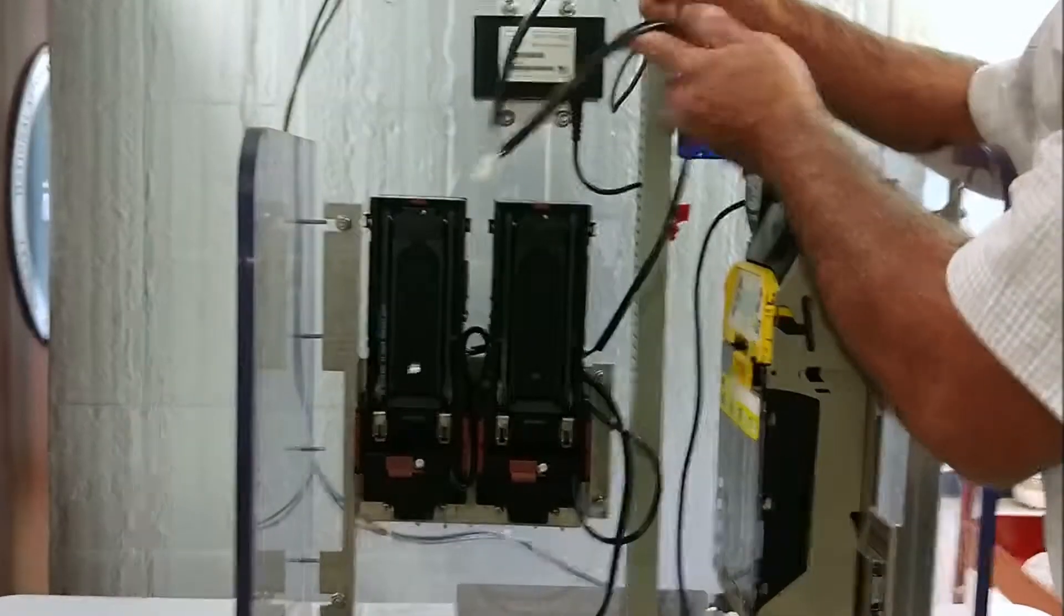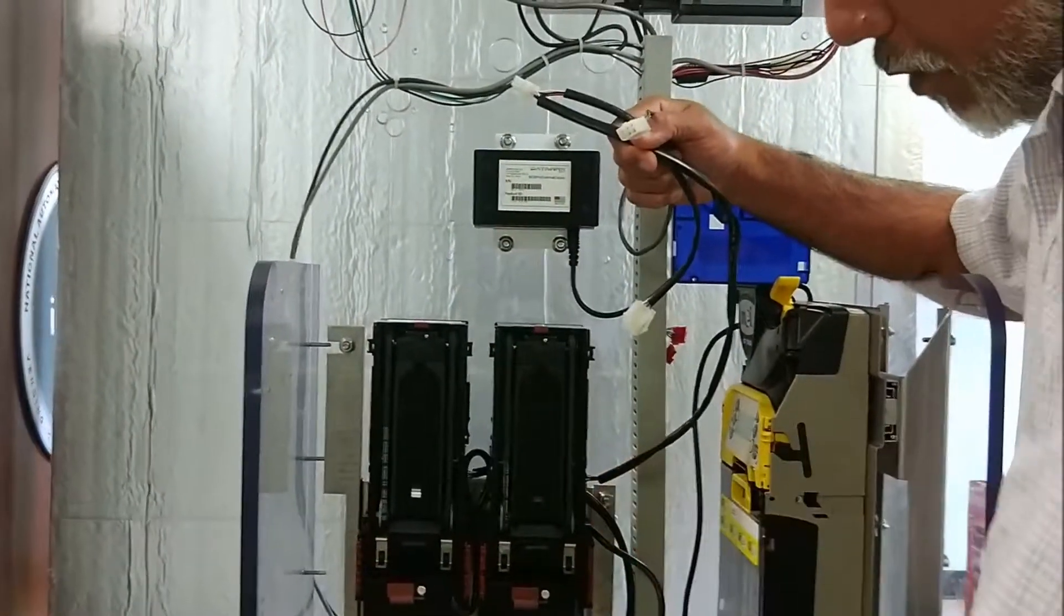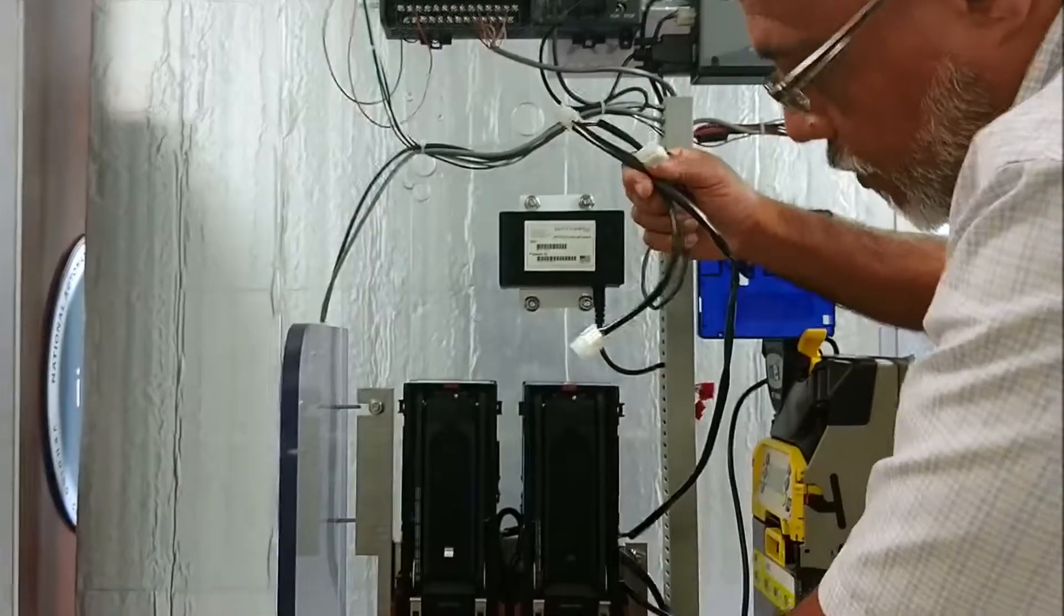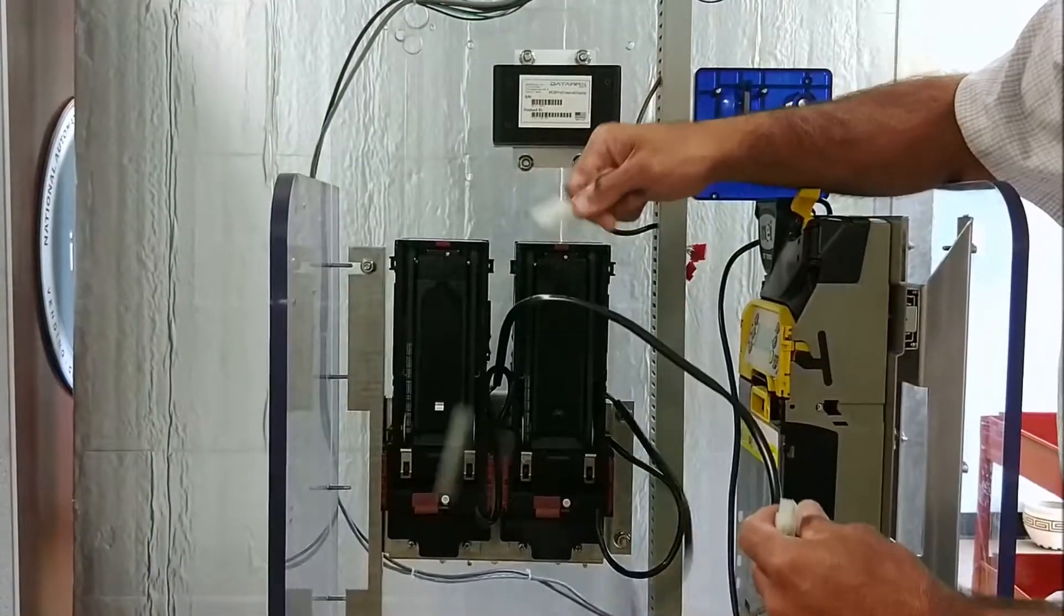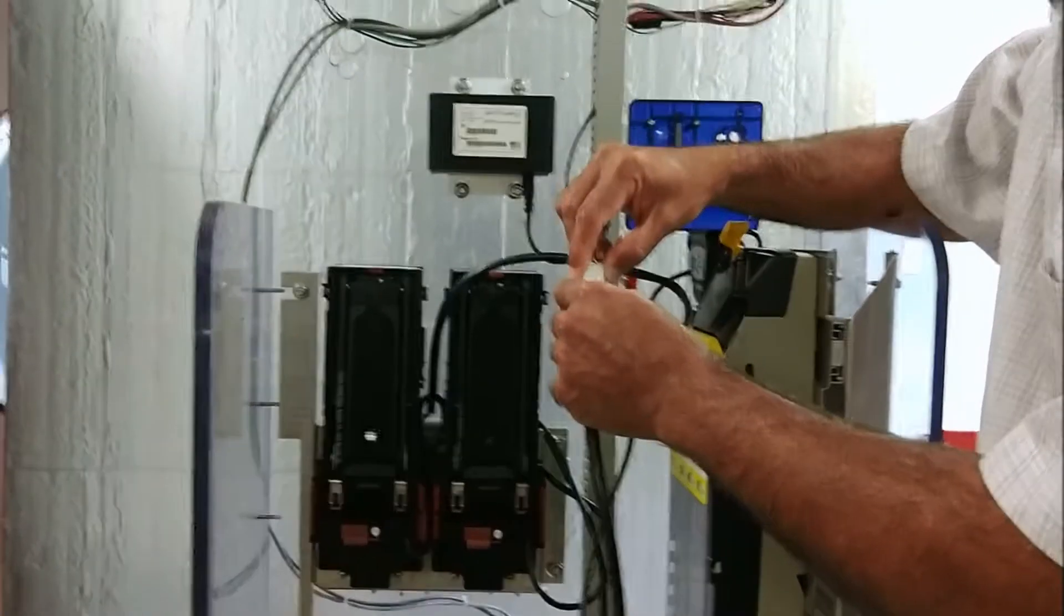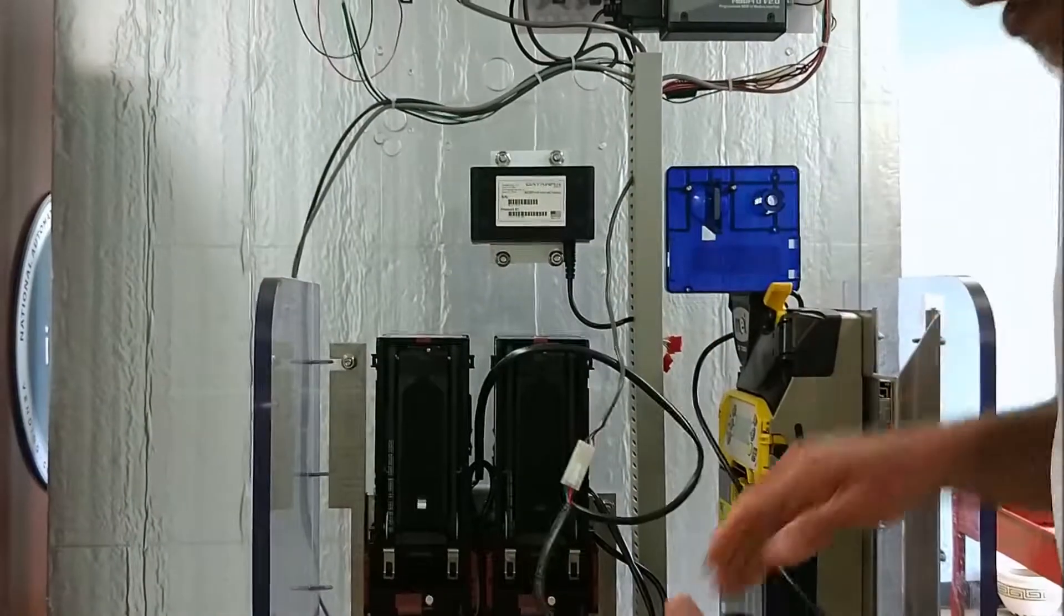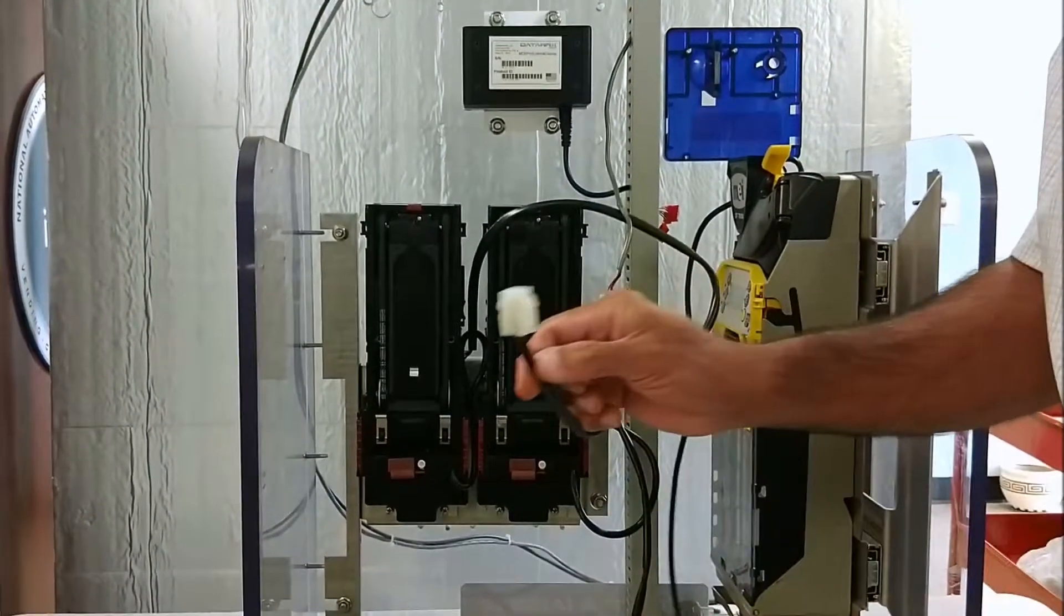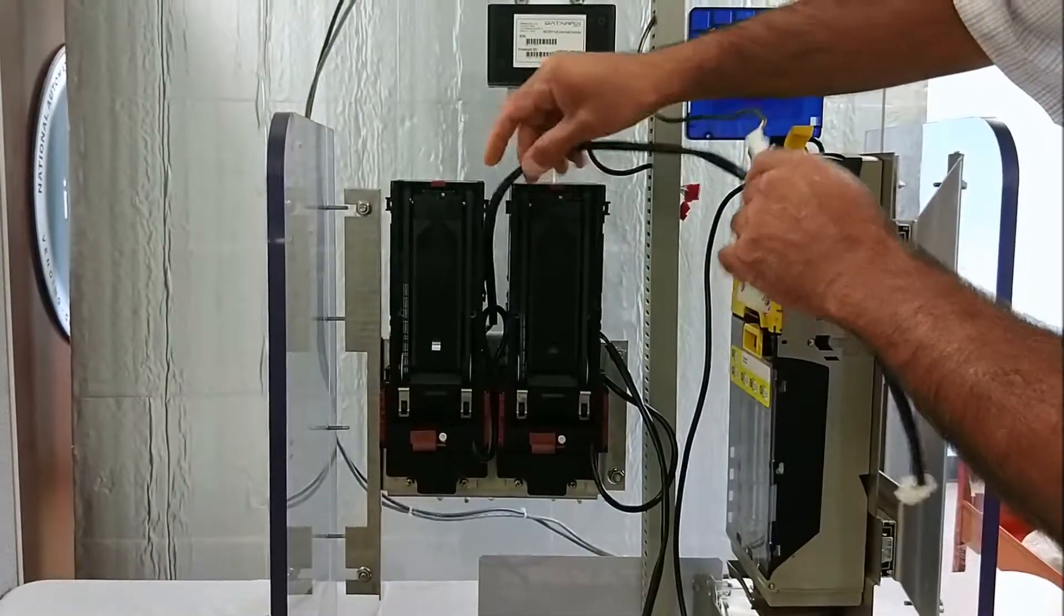This is one bill acceptor. I want to leave this bill acceptor as primary. I want to program this bill acceptor, which is connected to this cable as secondary. I'm going to connect that to the MDB Pro. This cable runs directly to the MDB Pro, and I'm going to disconnect the coin changer. This end is open. This end is connected to the MDB Pro, and that's it.